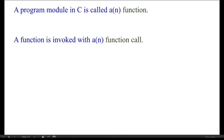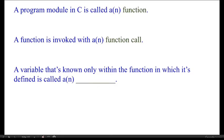A variable that is known only within the function in which it is defined is called a local variable. Koi function hai, uske ander koi variable hai, usko tab hi pehchana jata hai us function mein hi — isko local variable kaha jata hai.